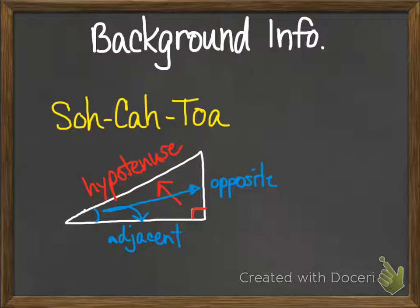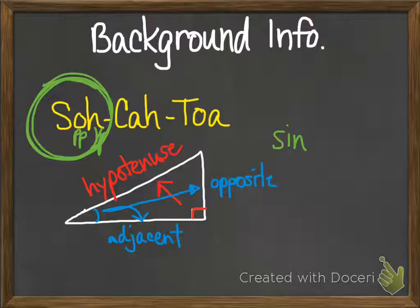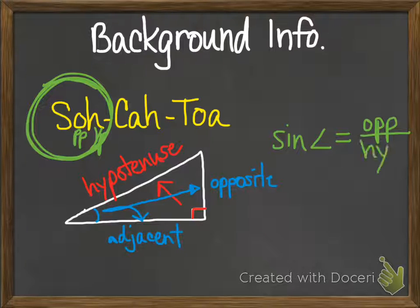Now this is important because if we're graphing the sine function, we're going to be focusing only on the opposite side and the hypotenuse of a right triangle. So the sine relationship, the sine of an angle, is equal to the ratio of the lengths of the sides of the opposite to the hypotenuse.